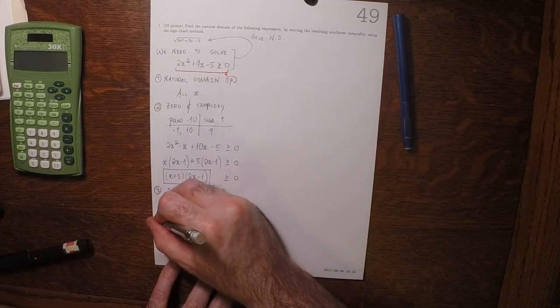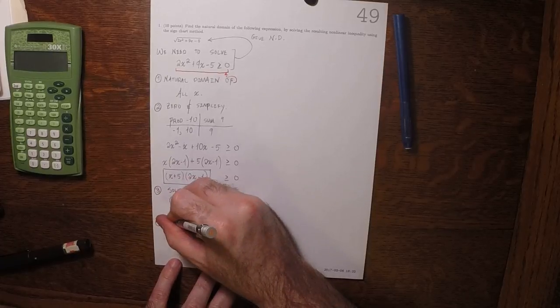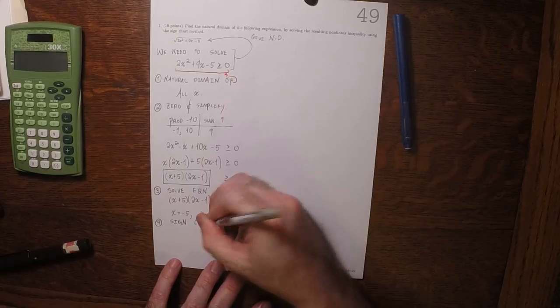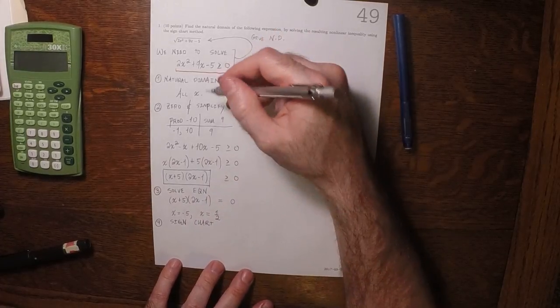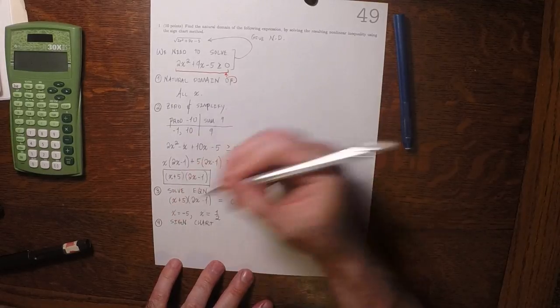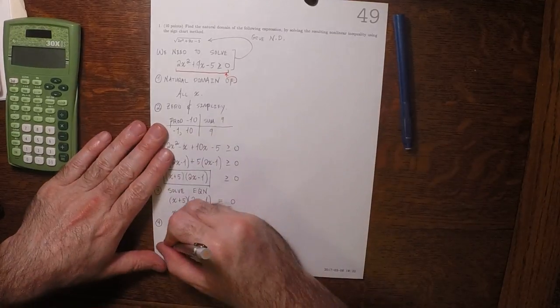So now we can make the sign chart. There were no breaks in the domain and there were these two solutions, so plotting them.